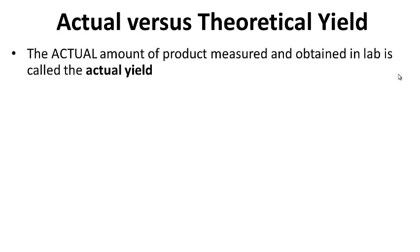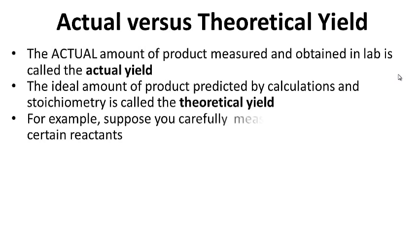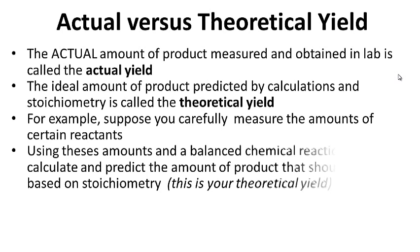Actual versus theoretical yield: the actual amount of product measured and obtained in lab is called the actual yield. The ideal amount of product predicted by calculations and stoichiometry is called the theoretical yield. For example, suppose you carefully measure the amounts of certain reactants. Using these amounts in a balanced chemical reaction, you calculate and predict the amount of product that should form based on stoichiometry — this is your theoretical yield.